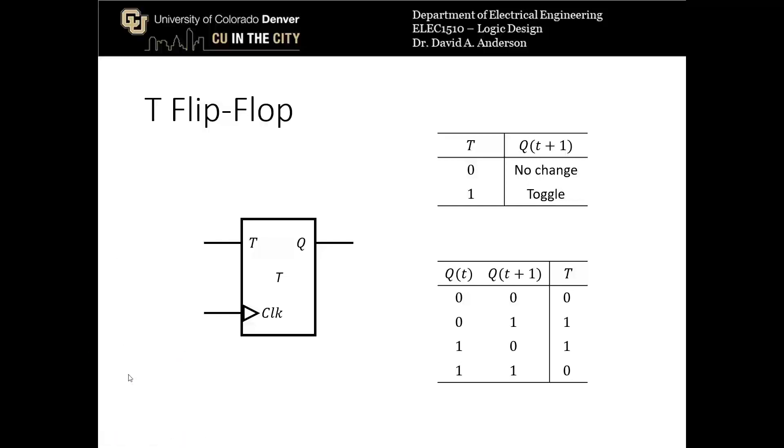In a more convenient form that we can use in state machine design, we can rewrite that characteristic this way. If Q moves from 0 to 0, T has to be a 0. If Q moves from either 0 to 1, or 1 to 0, T has to be a 1 to toggle the output. And if Q stays 1, T has to be a 0.